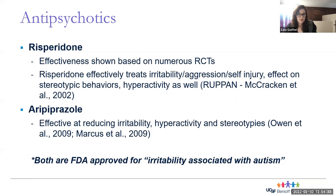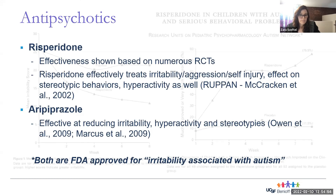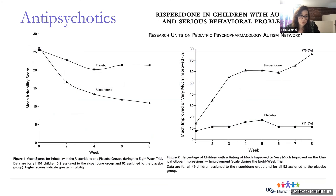Risperidone (Risperdal) and aripiprazole (Abilify) have FDA approval for irritability associated with autism, and effectiveness has been shown by multiple trials. The most prominent is the RUPP study, which showed effectiveness also for stereotypic behaviors and hyperactivity. A visual from the study shows a 75% CGI 'very much or much improved' rate after eight weeks with Risperdal versus 12% for placebo — a really huge difference. They are very effective.